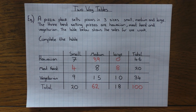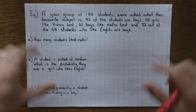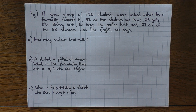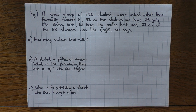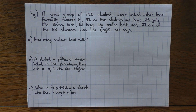Now let's look at a slightly trickier example. What makes it tricky is that they haven't given you a table — you have to draw your own. A year group of 186 students were asked what their favourite subject is. 92 of the students are boys, 28 girls like history best, 41 boys like maths best, and 22 out of the 68 students who like English are boys. We then have questions about actual numbers and probability, including a student picked at random and conditional probability.